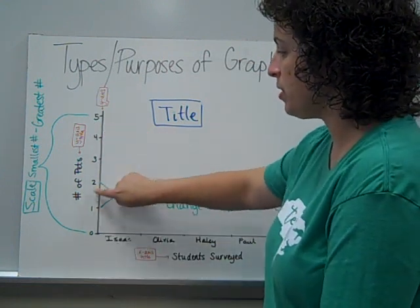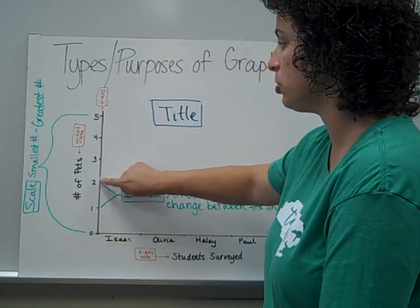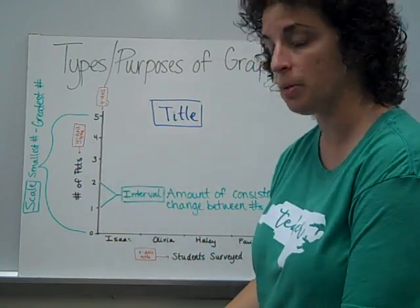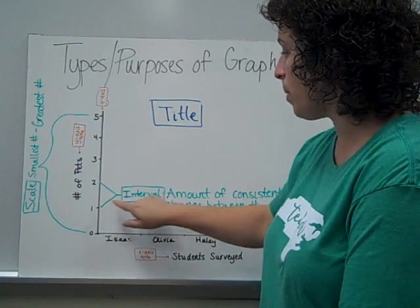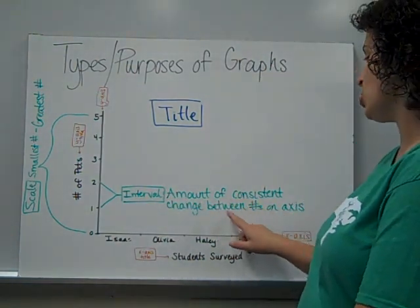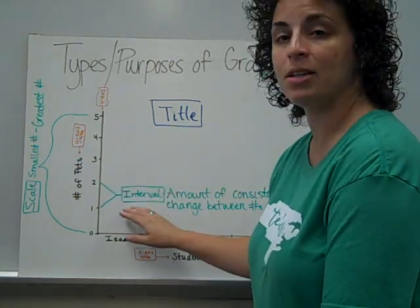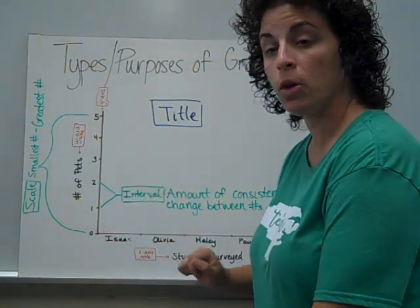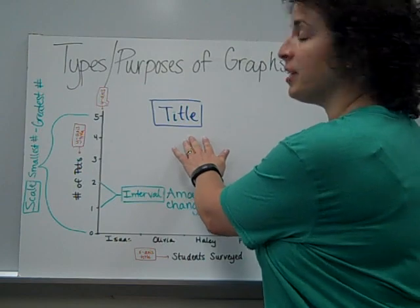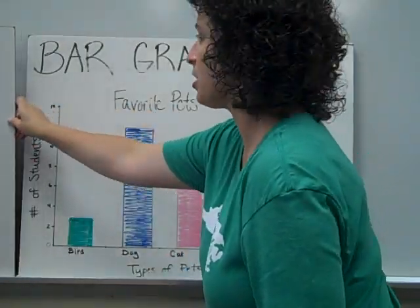When I'm looking up this y-axis, I see 0, 1, 2, 3, 4, 5. How are the numbers changing? Plus 1. And so my interval — the amount of consistent change between the numbers here on this axis — my interval would be 1. We'll take a look at some graphs today that have a different scale and different interval, so now we'll know what we're talking about.